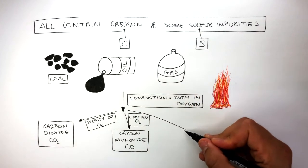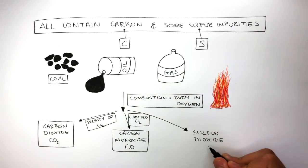During combustion, the sulfur also combines with oxygen, forming sulfur dioxide, which has a molecular formula of SO2.